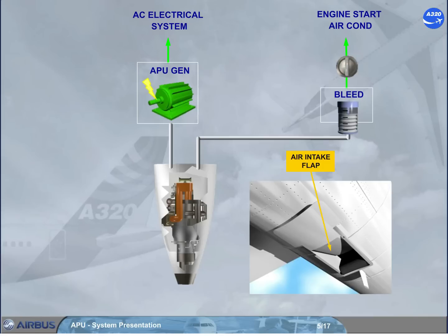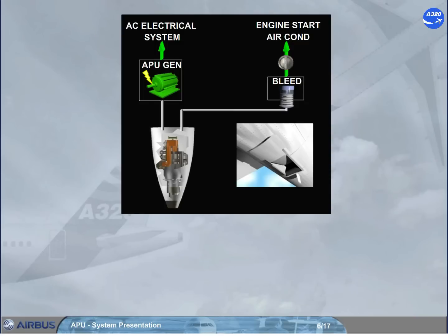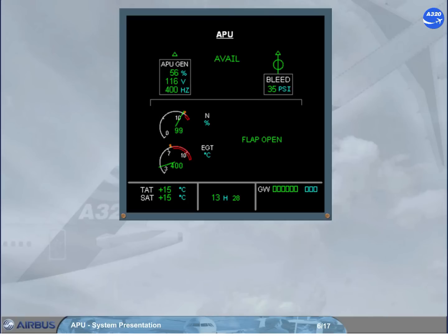Now we will see how information is presented to the pilots. In the cockpit, you can check the following APU parameters on the ECAM APU page: EGT and compressor speed, APU generator, APU bleed, and air intake flap position.